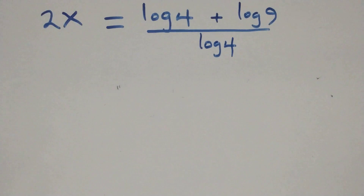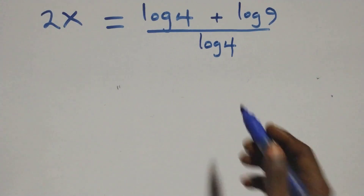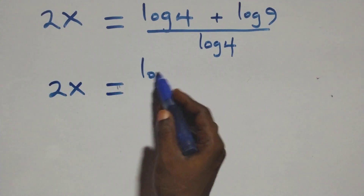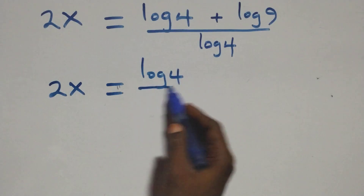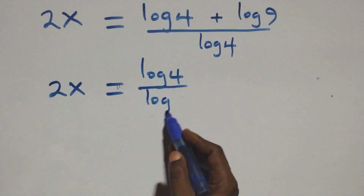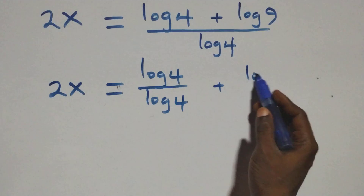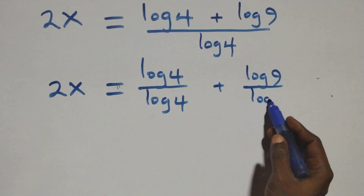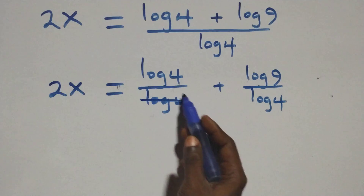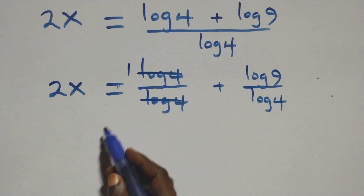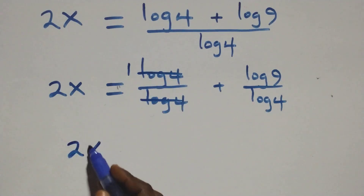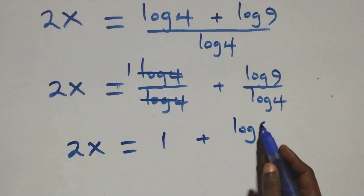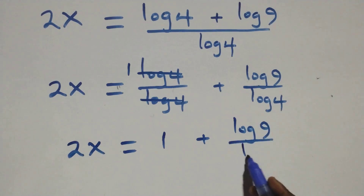Next step, we separate this into two fractions. We have 2x equals to log 4 over log 4, plus log 9 over log 4. Log 4 cancels each other and we have 1 left. Which implies 2x equals to 1 plus log 9 over log 4.